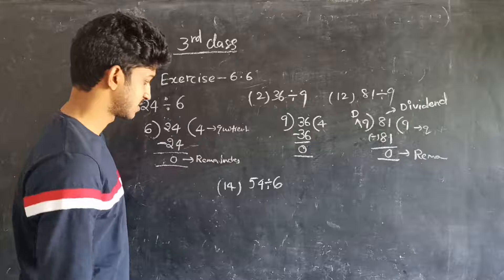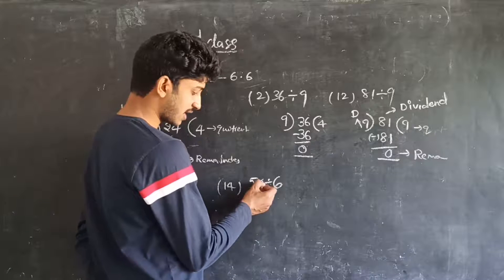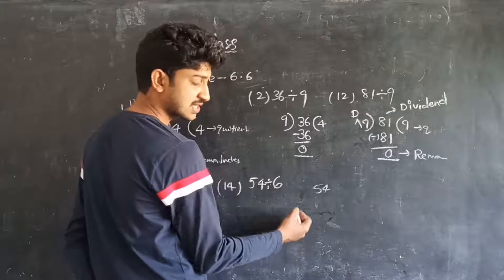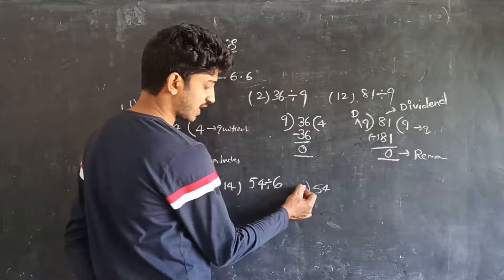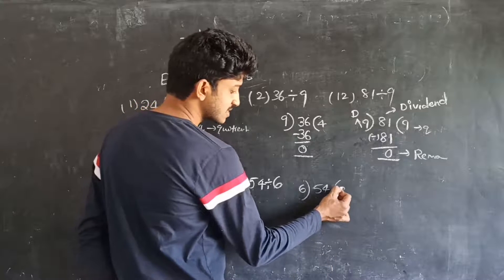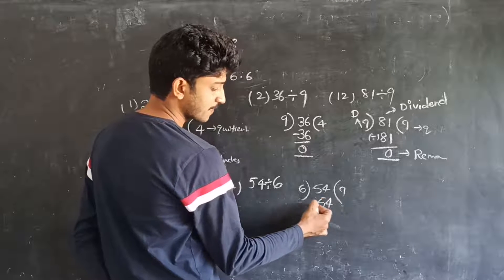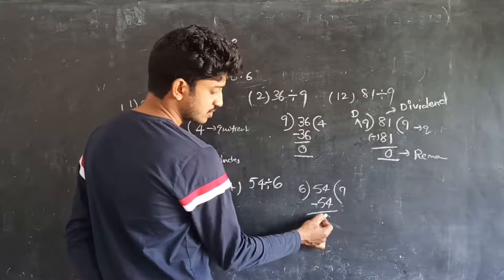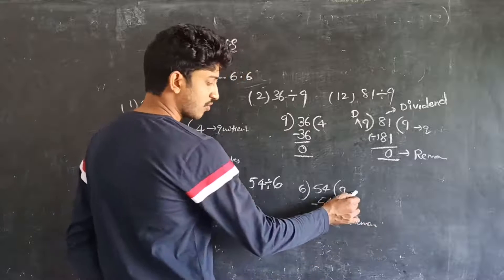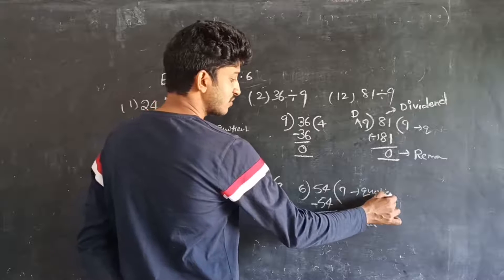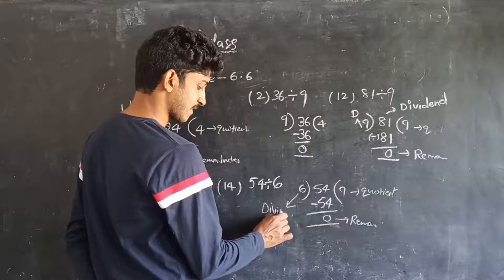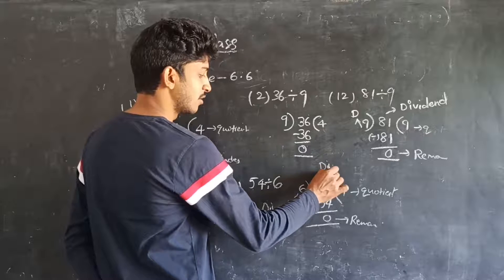Next problem: 54 divided by 6. Here 54 is the dividend and 6 is the divisor. Take the dividend 54 at the center and write the divisor 6 on the left side. In the 6 times table, 54 comes 9 times — 6 into 9 is equal to 54. So 54 minus 54 is equal to 0. The remainder is 0 and the quotient is 9. The divisor is 6 and the dividend is 54.